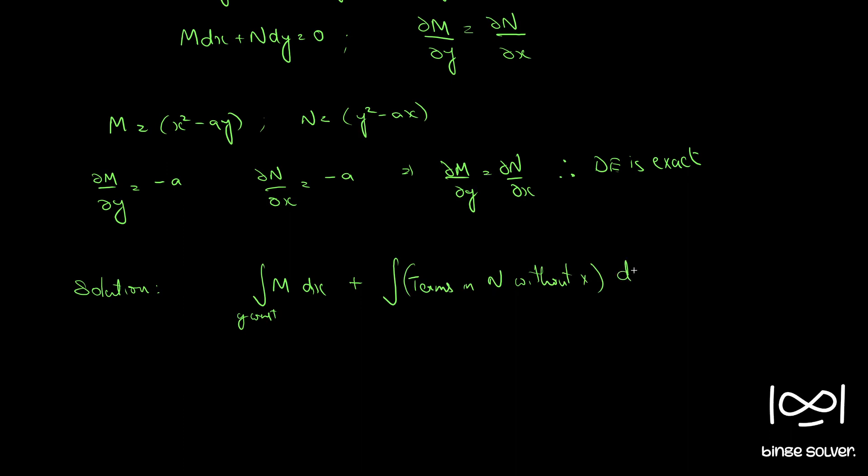Which is integral of (x² - ay)dx plus integral of terms in N without x, which is y², dy = c.